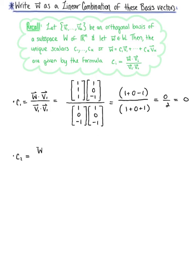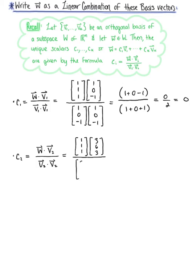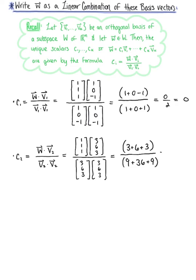Scalar c sub 2 is defined as vector w dotted with vector v sub 2 all divided by the dot product of vector v sub 2 with itself. In the numerator we have the dot product of vector w, 1, 1, 1 with vector v sub 2, 3, 6, 3, giving us 3 plus 6 plus 3. In the denominator we have 9 plus 36 plus 9, which simplifies to 12 over 54, which we can reduce to 2 ninths.